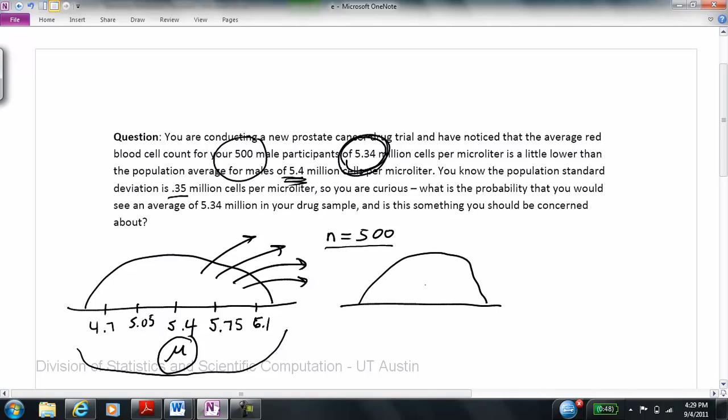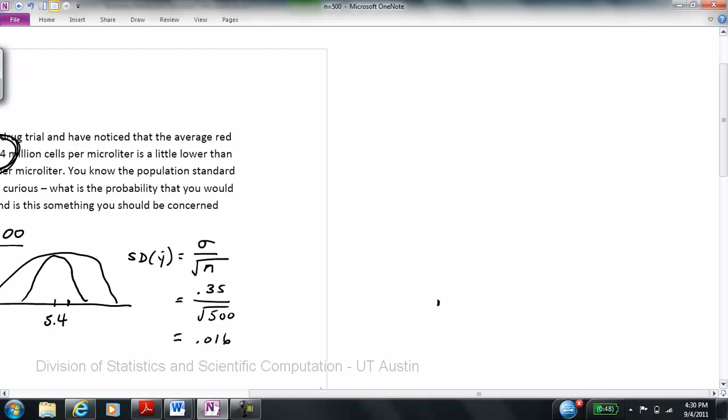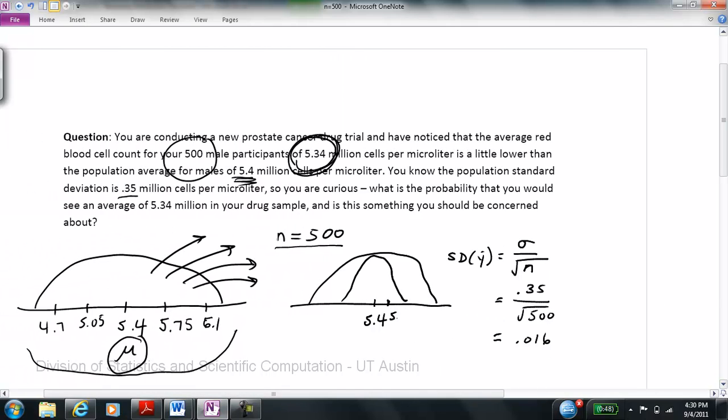When we have a sampling distribution like this, according to the central limit theorem, our sample is still going to be centered at the population average. But what is going to change is our standard deviation. And in this case, our standard deviation is going to be equal to the population standard deviation divided by the square root of our sample size. In this case, our sample size is going to be equal to 500. So we are going to be looking here at 0.35 divided by the square root of 500. And this number happens to work out to be 0.016. So in our case, it is actually a very different kind of distribution because it is a much smaller standard deviation here. So this is 5.56. Much smaller than we had over here in our population version.